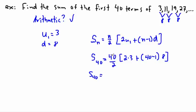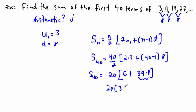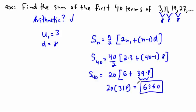So I can just keep going. 40 divided by 2 is 20. Then 2 times 3 is 6. Plus 40 minus 1, that is 39. And then I need to do 39 times 8, which should be 312. So 312 plus 6 is 318. And then 20 times 318 — double it — that gives me 6360. That is my answer, the sum of the first 40 terms. You're welcome to use a calculator. So 6360.